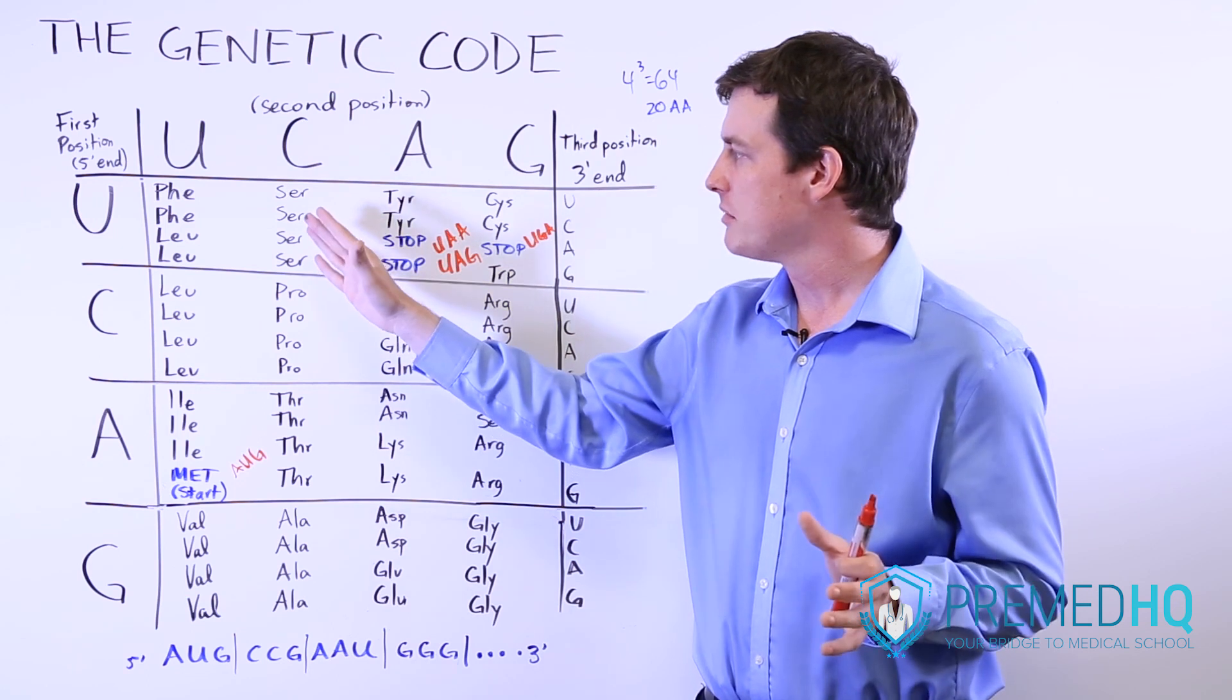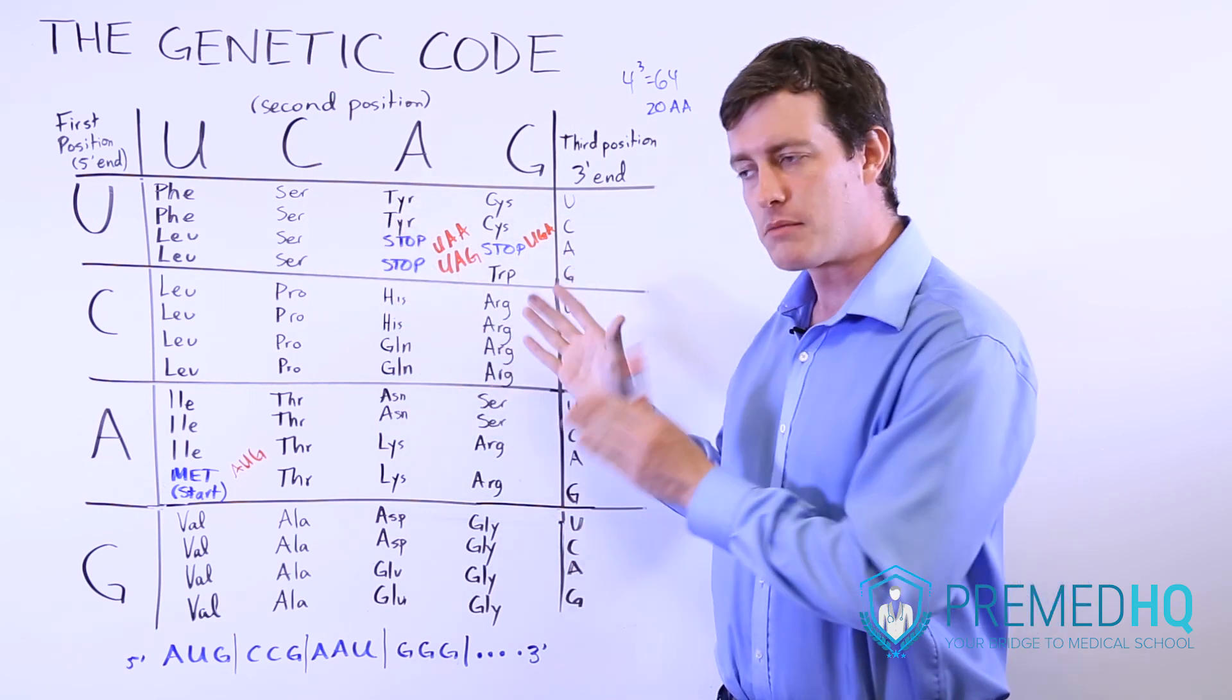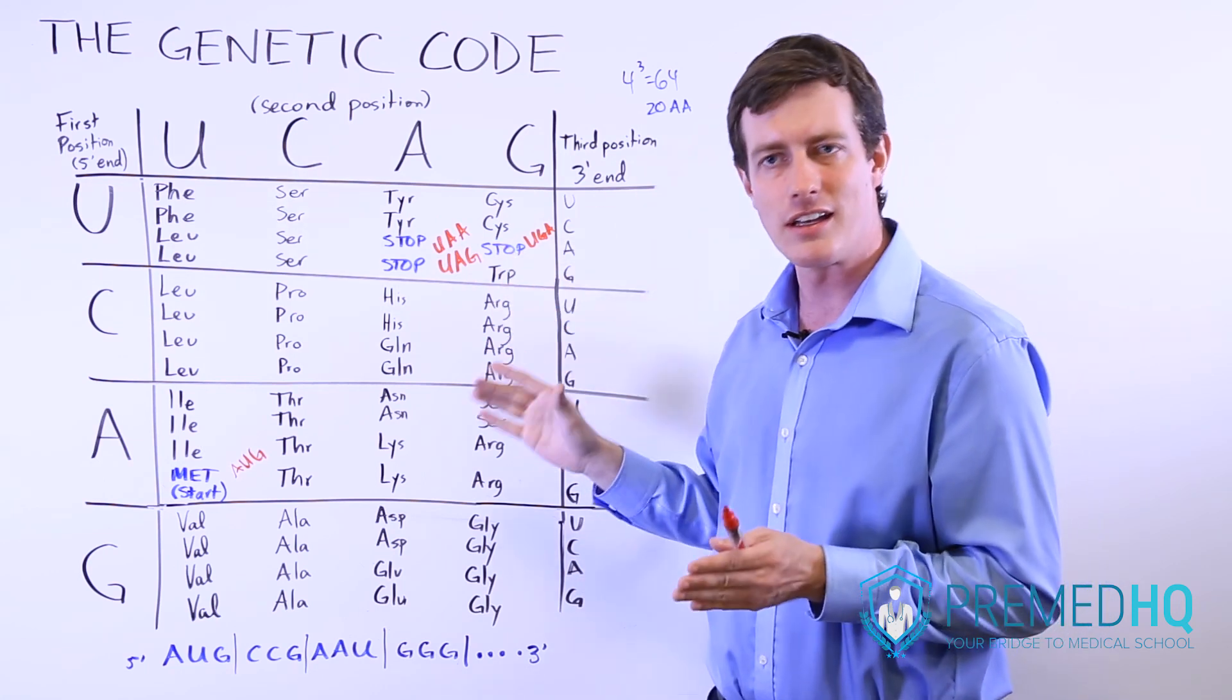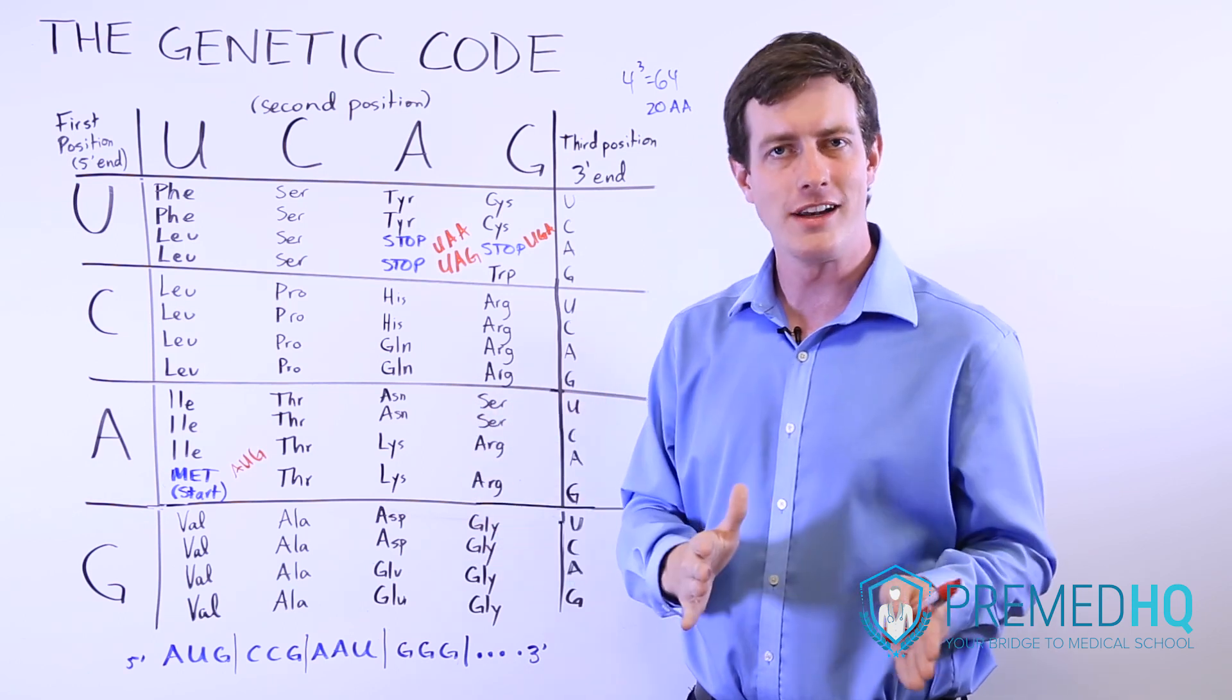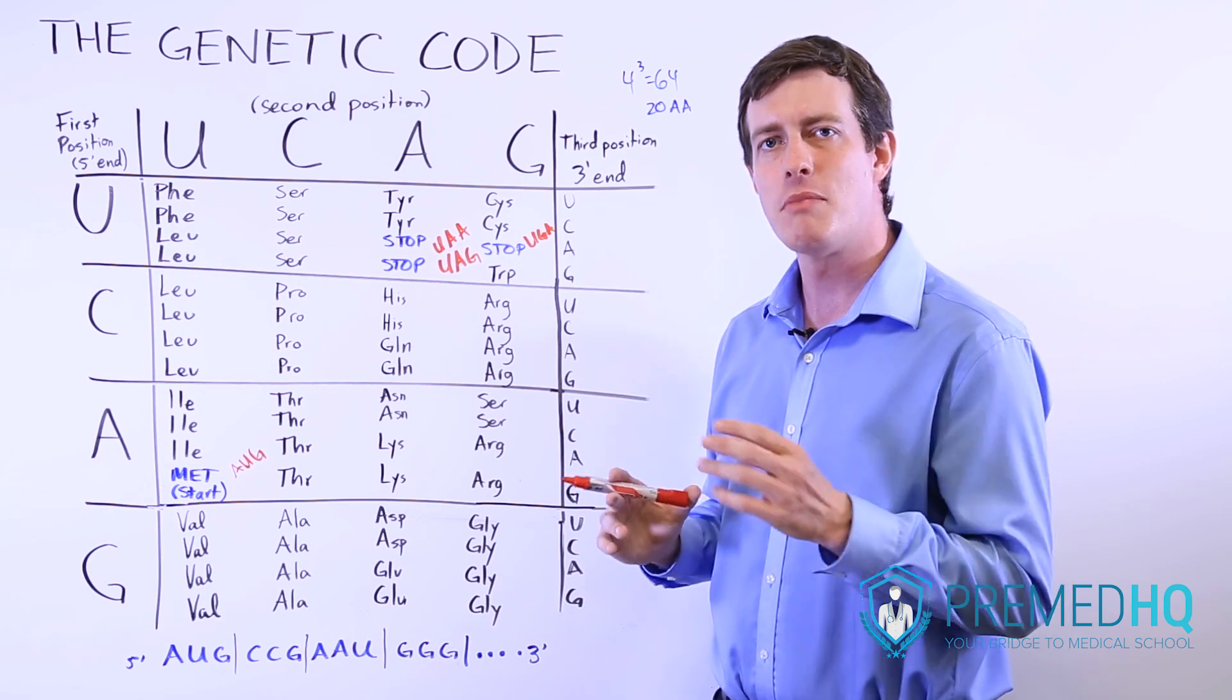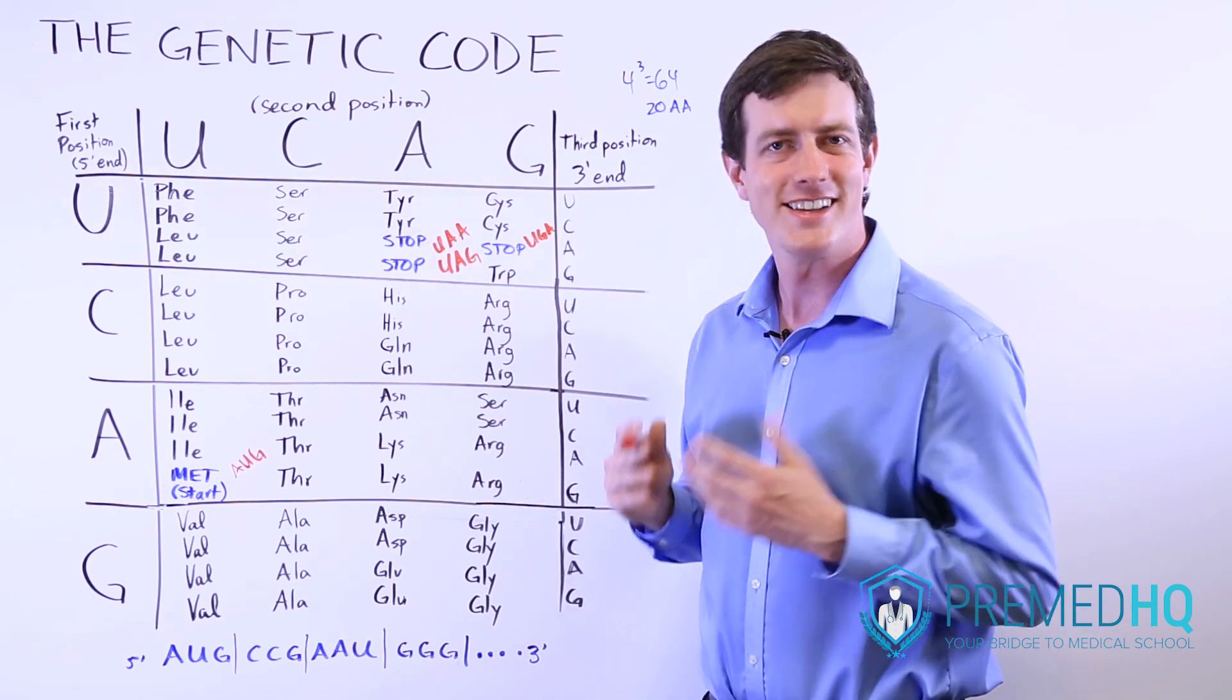So silent is not going to be experienced. A missense may be something that is significant, and a nonsense will be significant. You're basically stopping the translation before it is supposed to be stopped. Those are our three types of point mutations, and remember those involve taking out one base and putting a different one in instead.